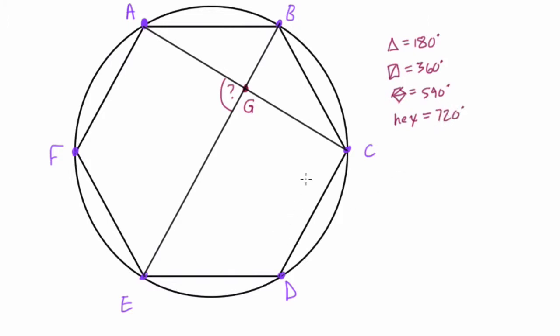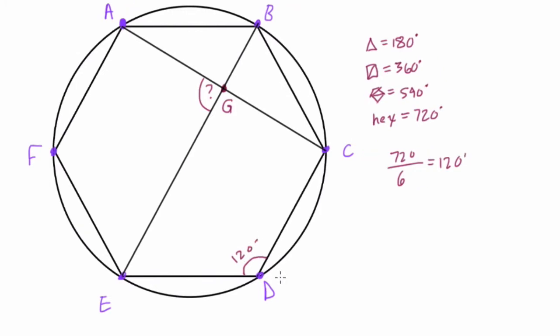It's a regular hexagon, so every angle is the same. So if I look at angle D, it's going to be 720 degrees, the total interior angle sum, divided by the number of angles, which is 6. And that's 120 degrees. So this angle, like every other in the hexagon, is 120 degrees.